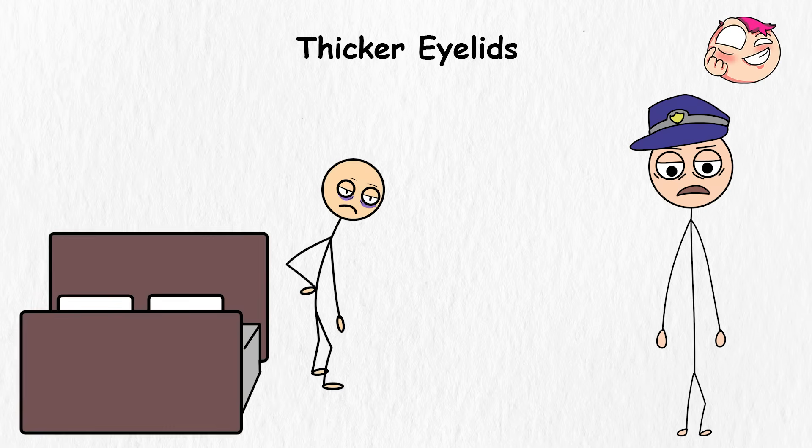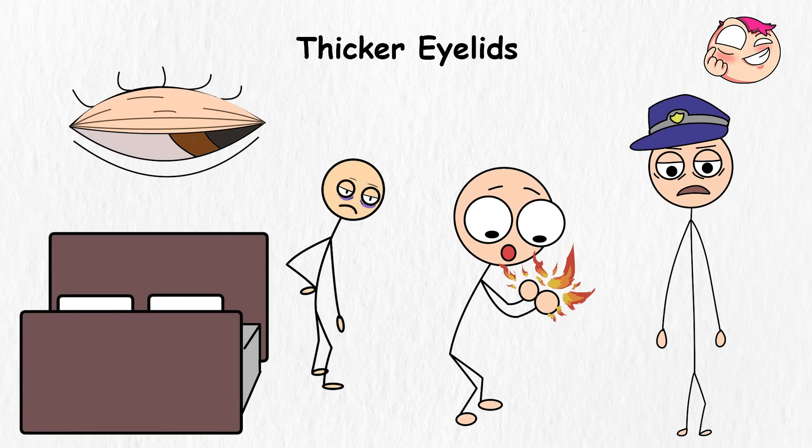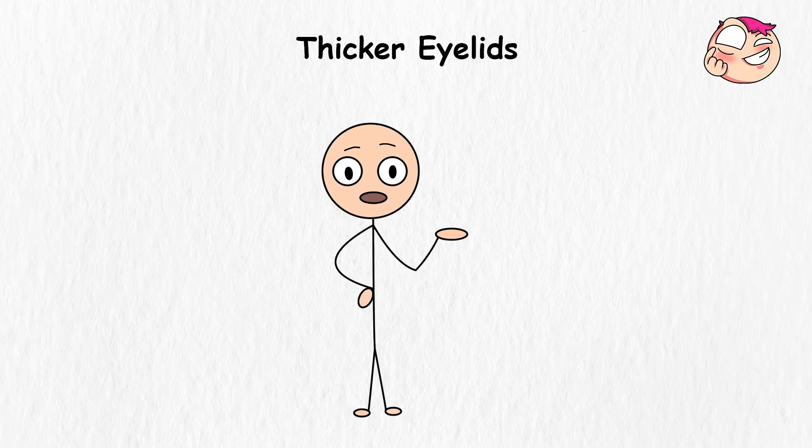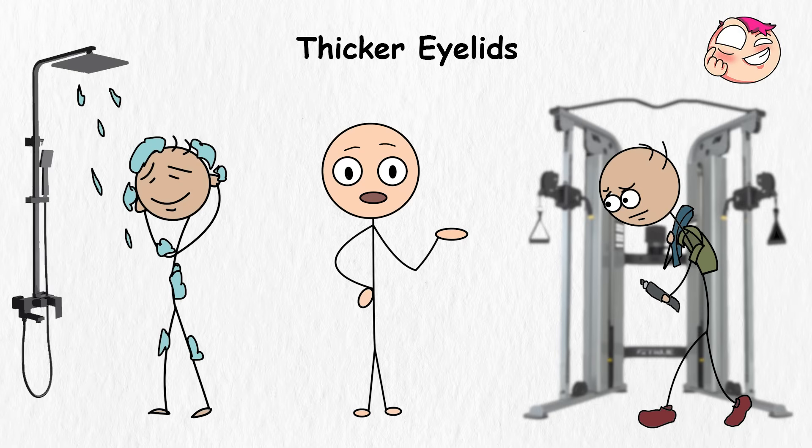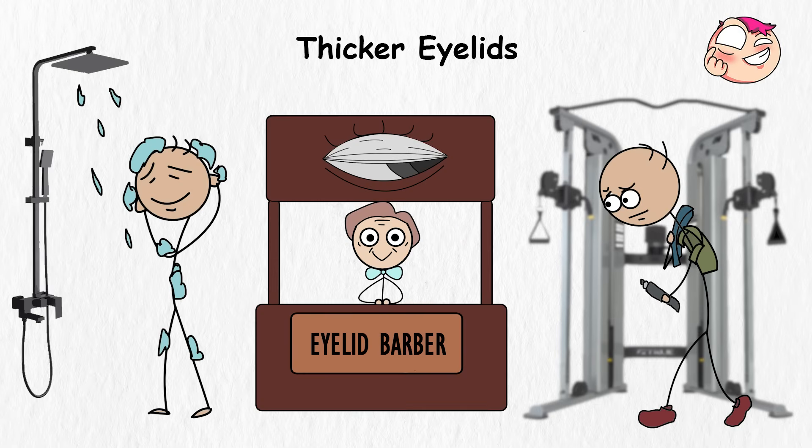However, just like any superpower has its kryptonite, having superior eyelids might also come with a few problems of its own. For instance, things as simple as blinking and subtle winks might feel like doing reps at the gym. Plus, thicker eyelids might need extra grooming, so just imagine how weird it would feel to have eyelid barbers popping up on every corner.